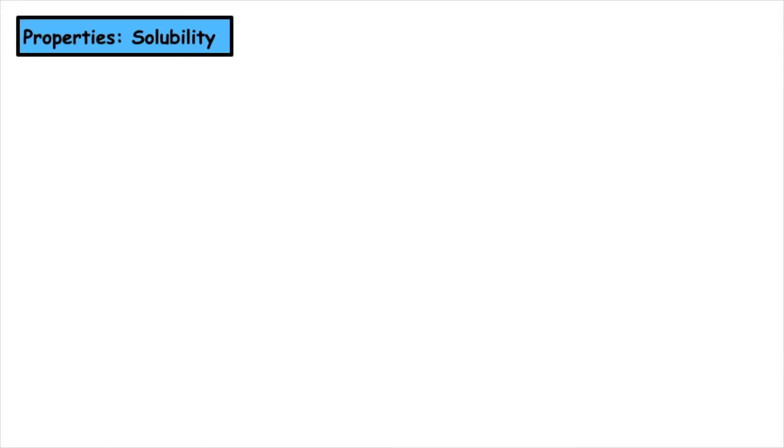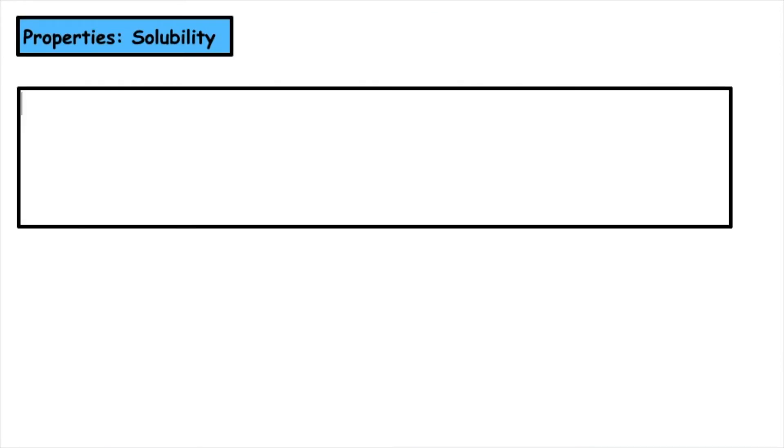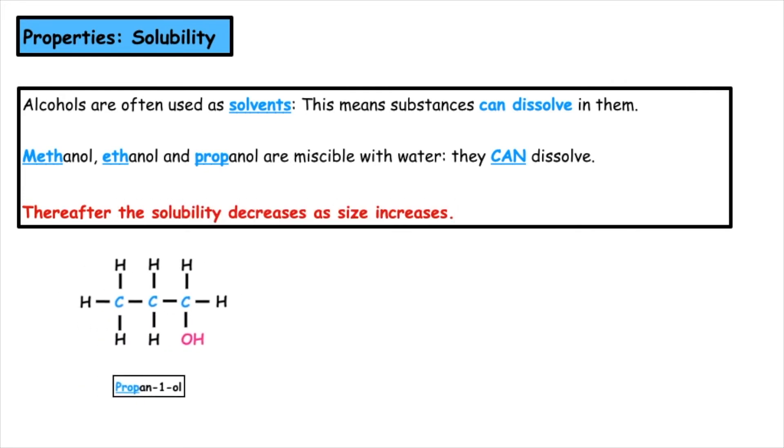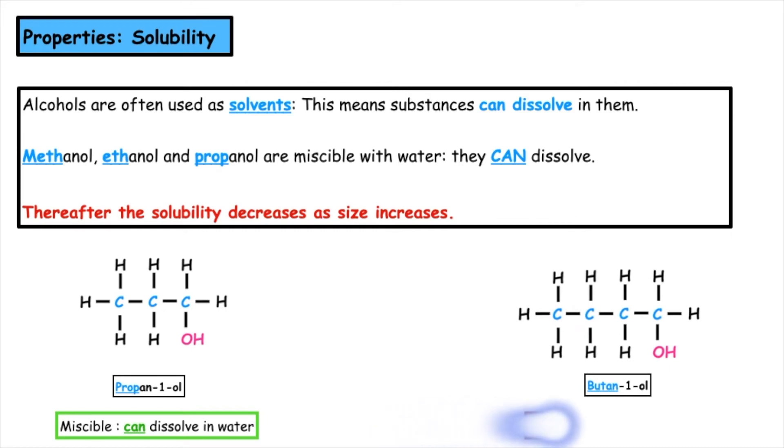The next property is solubility. Alcohols are often used as solvents, meaning substances can dissolve in them. Methanol, ethanol, and propanol are miscible with water, meaning they can dissolve readily. These are alcohols with one, two, or three carbon atoms in their chain. When we increase the carbon chain length from four carbons onwards, the solubility decreases as the size of the chain increases.